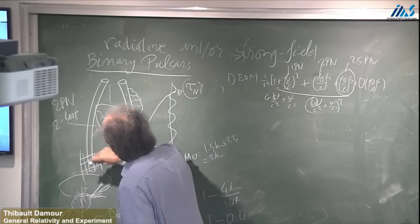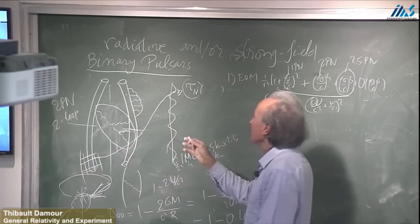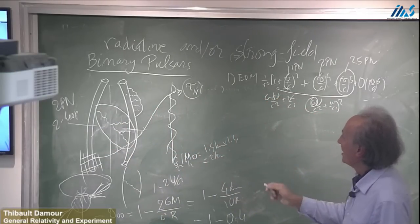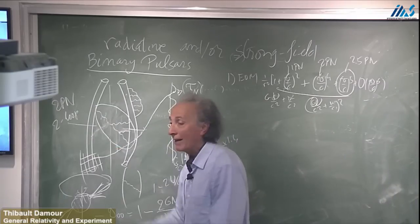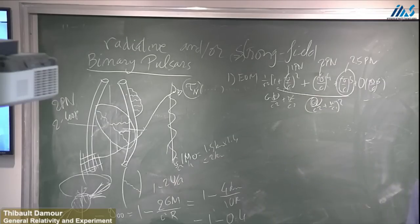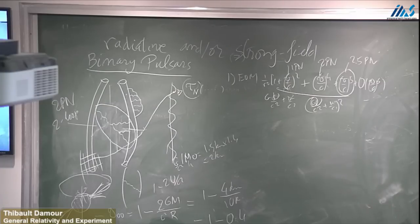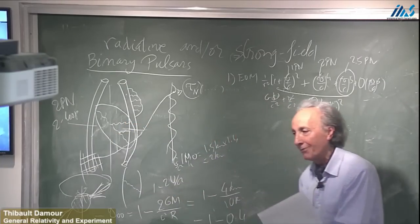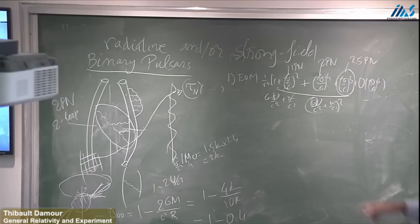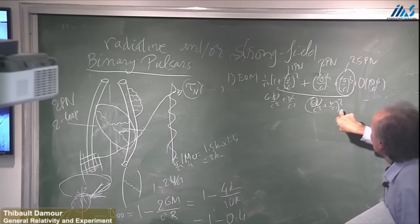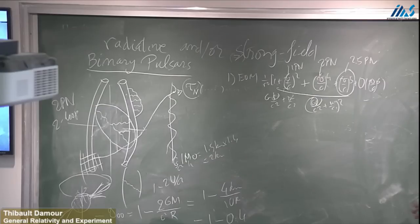The reason why you cannot just compute the Fokker action here — you must compute the equations of motion — is because you want to take into account that these propagators are retarded. The gravitational interaction between the companion and the pulsar takes a certain time to propagate — about one second, because they are one light-second away. So it takes one second for the 1/R^2 force to propagate, and this is not negligible at all. All the non-linear things also have retardation effects. You need to take all these retarded effects into account carefully to derive the equations of motion correctly.